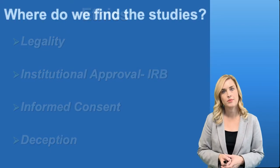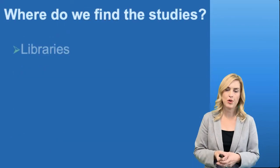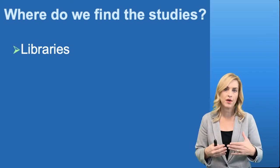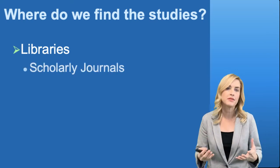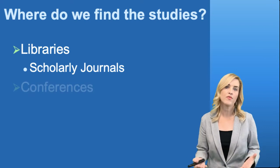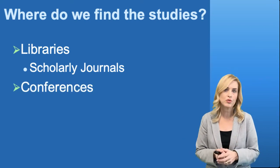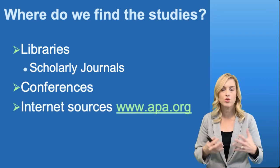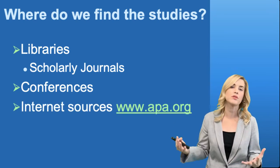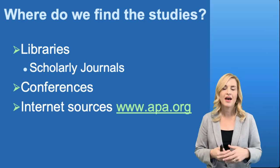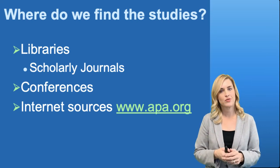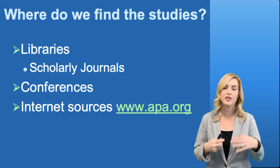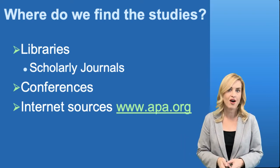Where do we find these studies? You can find them in libraries. You can certainly find them in colleges and universities in their databases. We go to conferences and we present our research and we listen to the research of others as well. You can also go to internet sources. You can go to Google Scholar and actually Google some of the research that is out there, as well as the American Psychological Association, which also has some resources available. You can see what some of the journal articles and journals are that are out there in psychology.